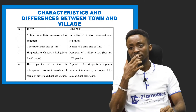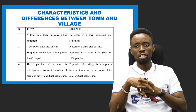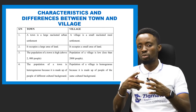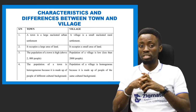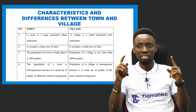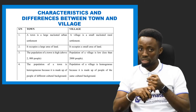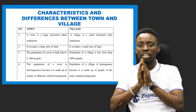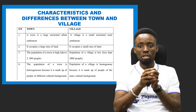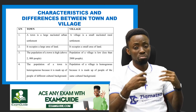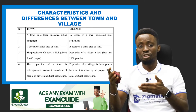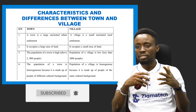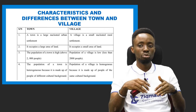Let's look at the characteristics and differences between a town and a village. These features are always in contrast with one another. A town is large, nucleated, and an urban settlement, while a village is a small, nucleated, rural settlement. A town occupies a large area of land, but a village usually occupies a small area, with the rest remaining for agricultural activities. The population of a town is usually above 2,000 people, while that of a village is less than 2,000.